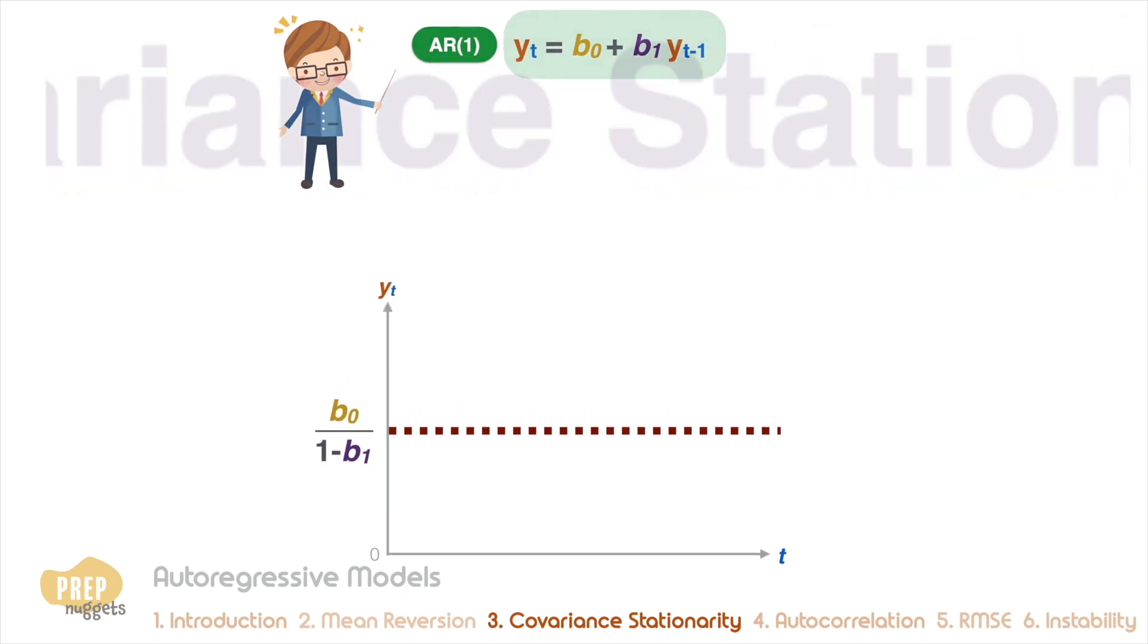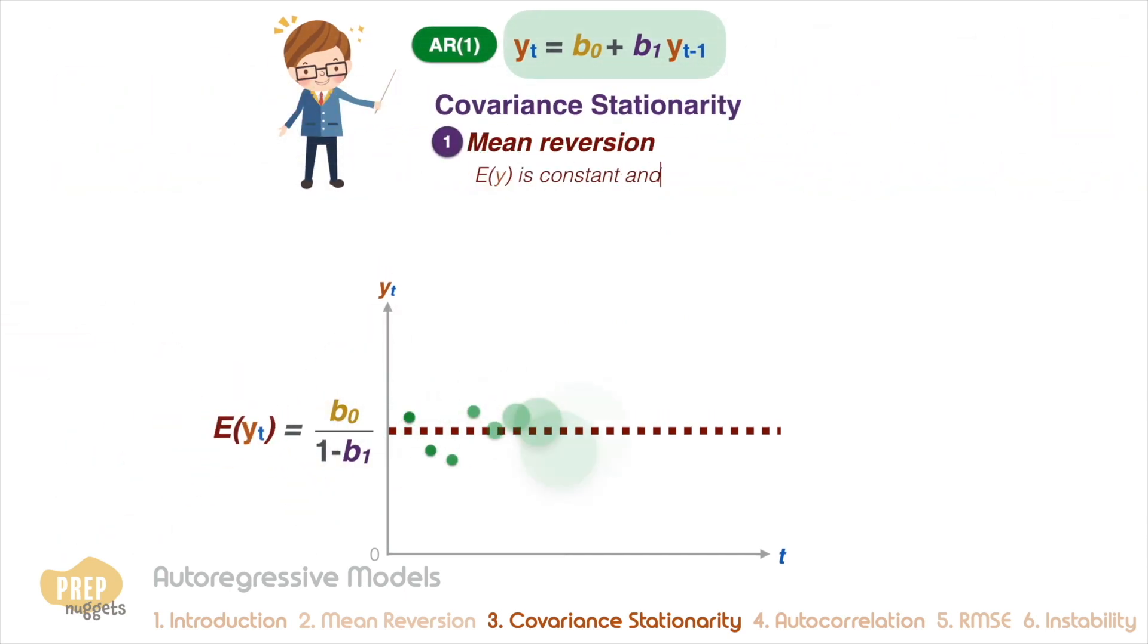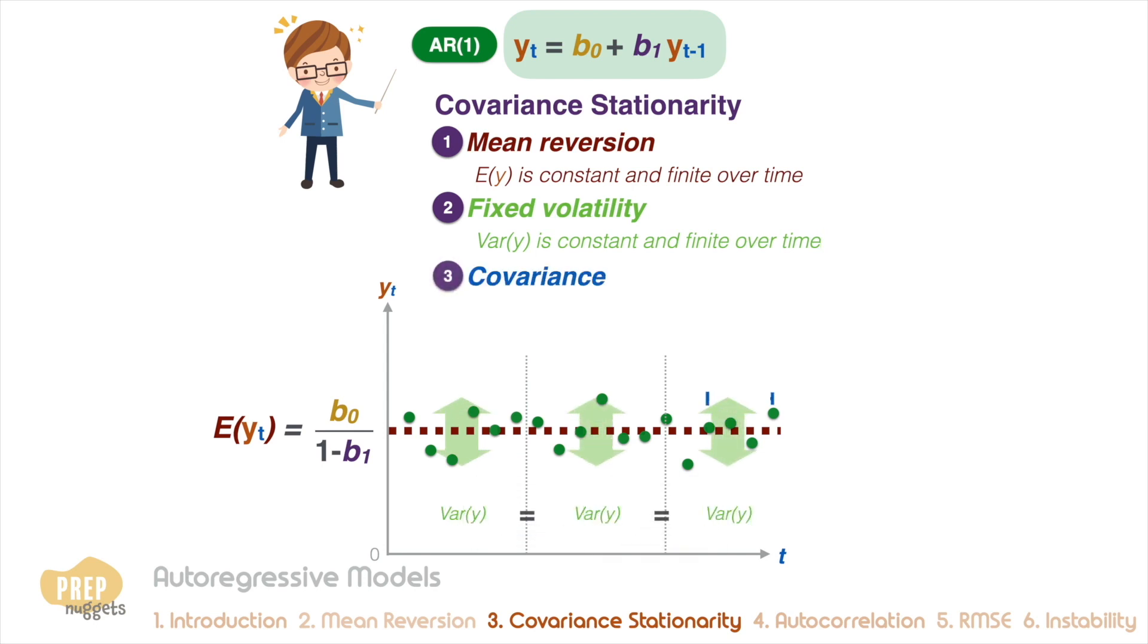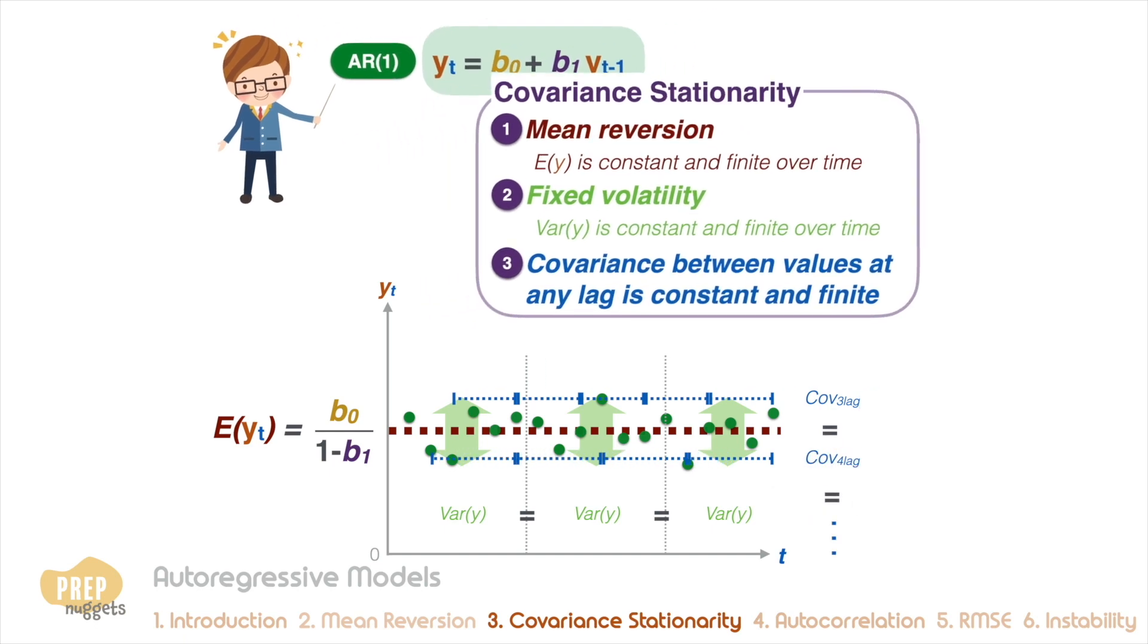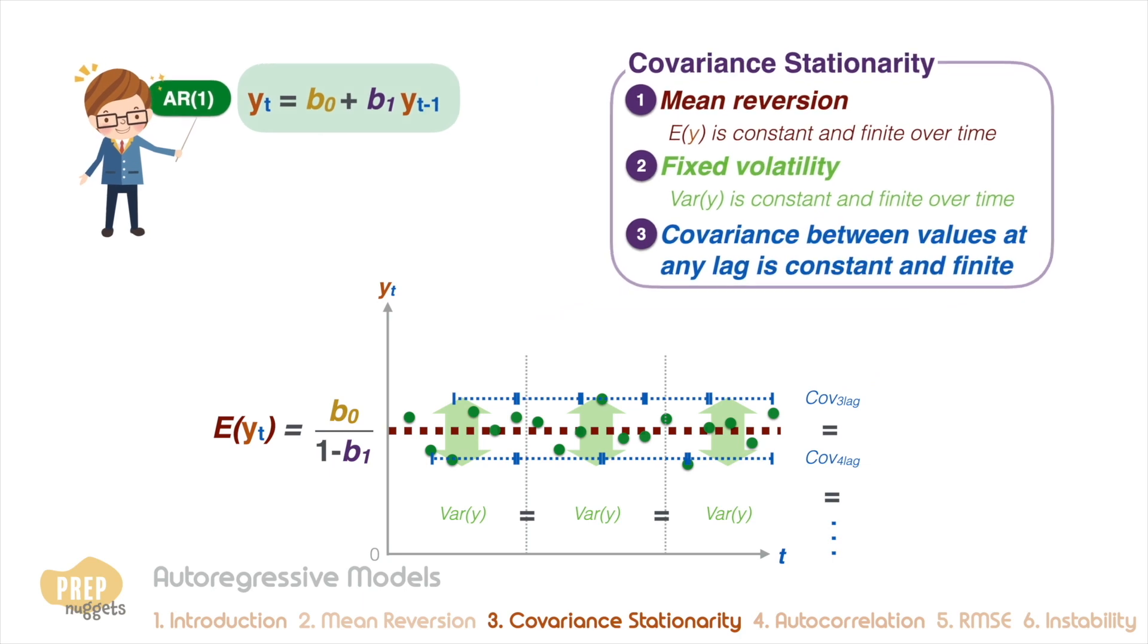Besides having a finite mean reverting level, which means that the expected value of the series is constant and finite over time, covariance stationary time series also need to satisfy the condition that the volatility is fixed, meaning that the variance is constant and finite over time. Also, the covariance between values at any given lag is constant and finite. And these are the three important criteria for a time series to be termed covariance stationary.